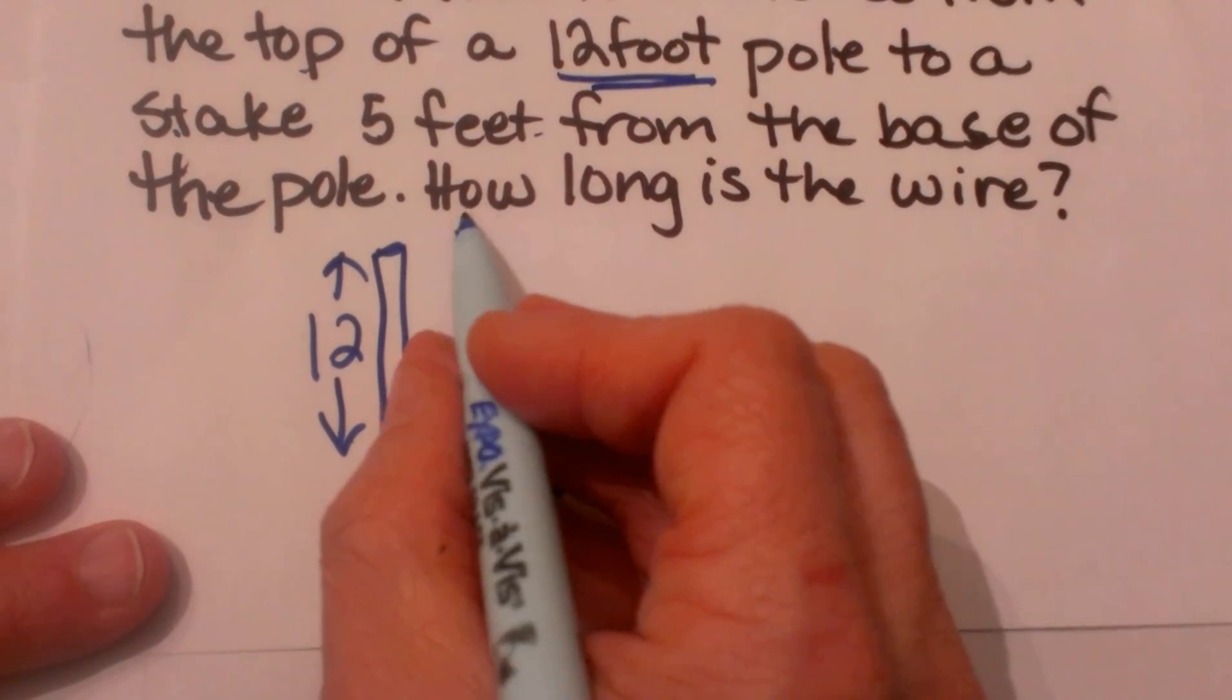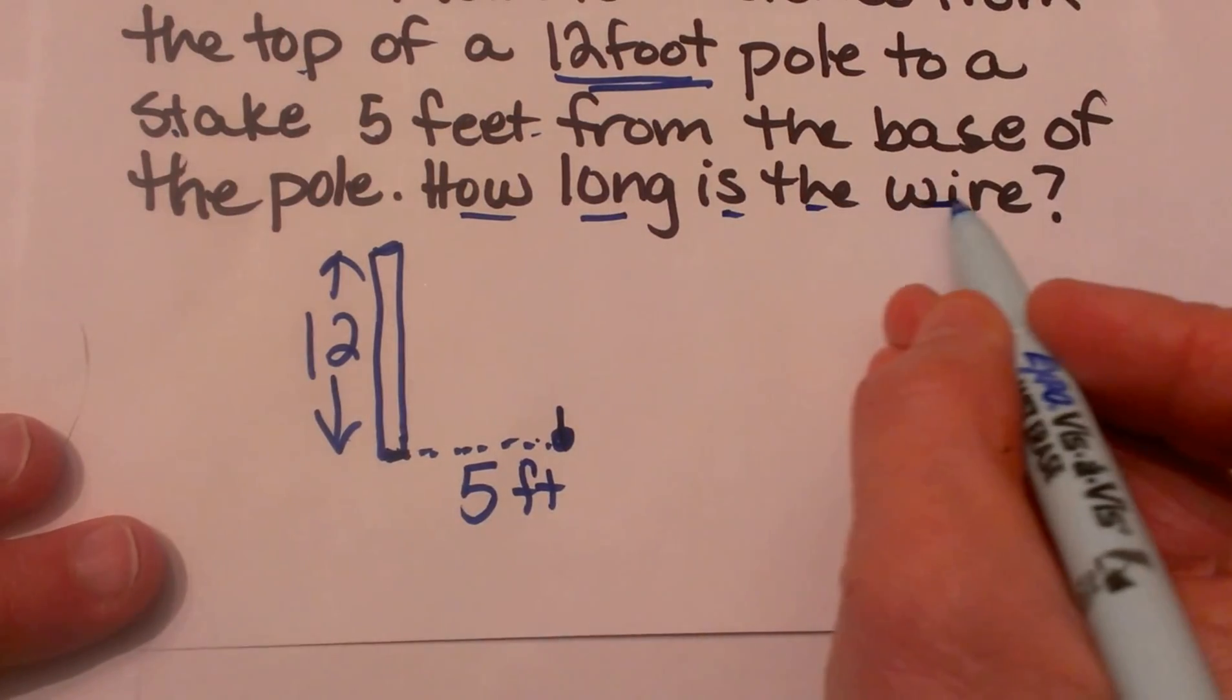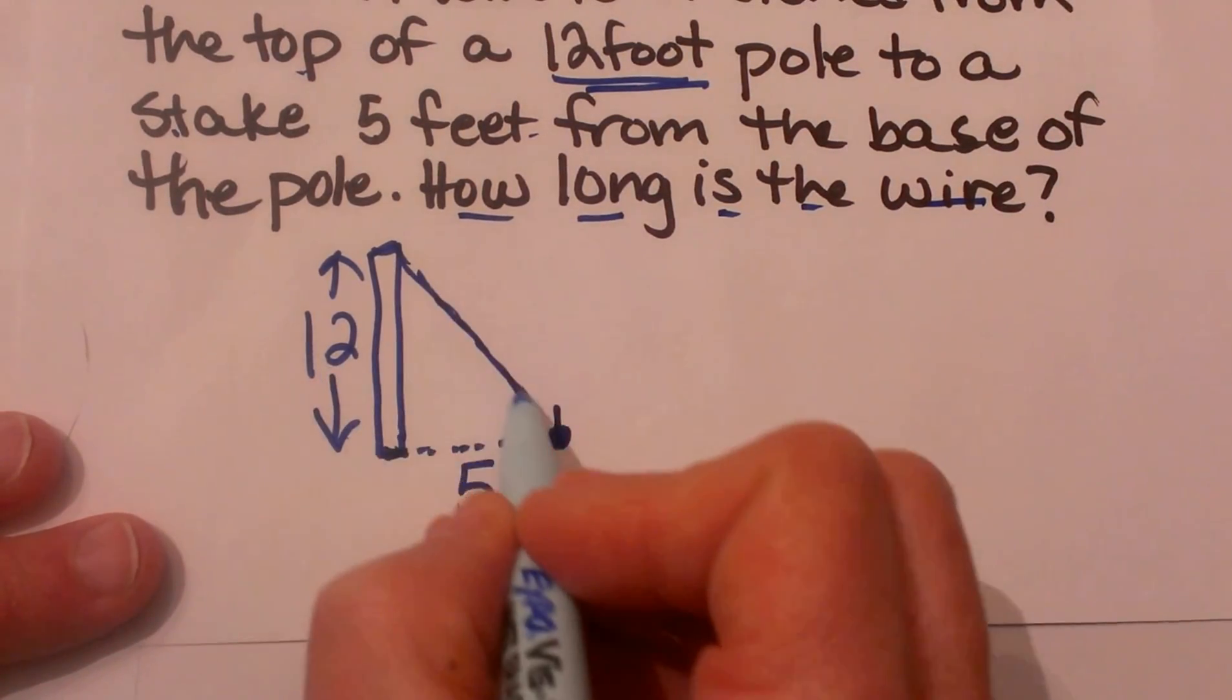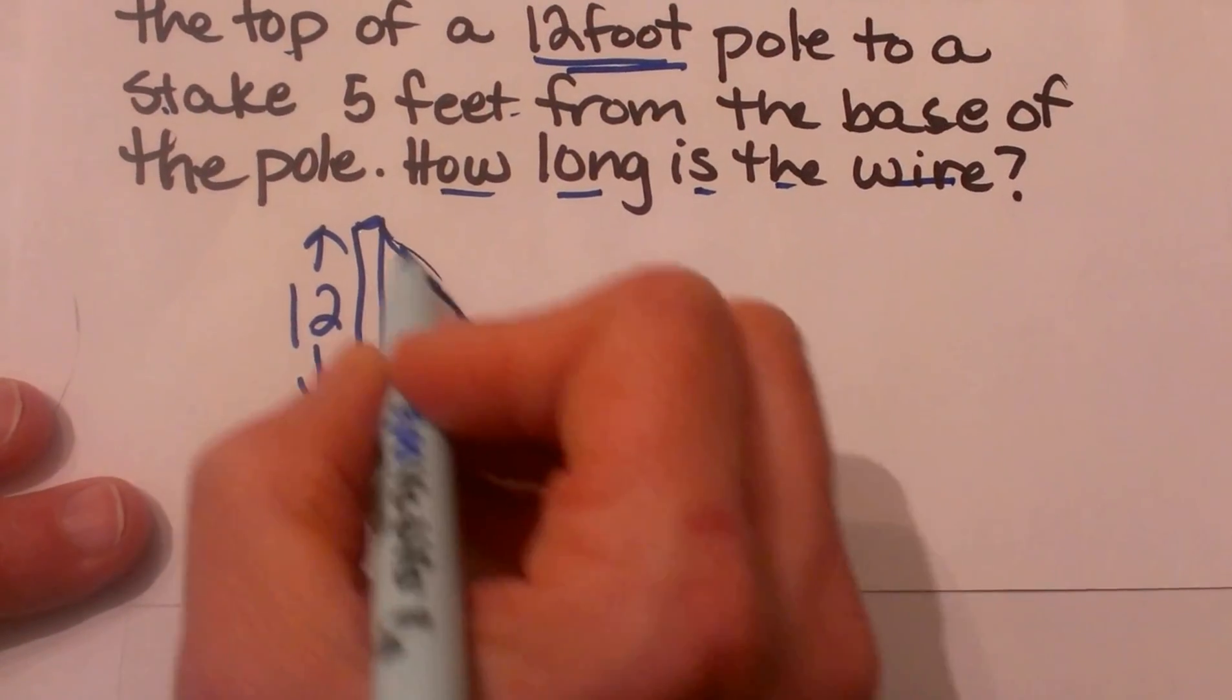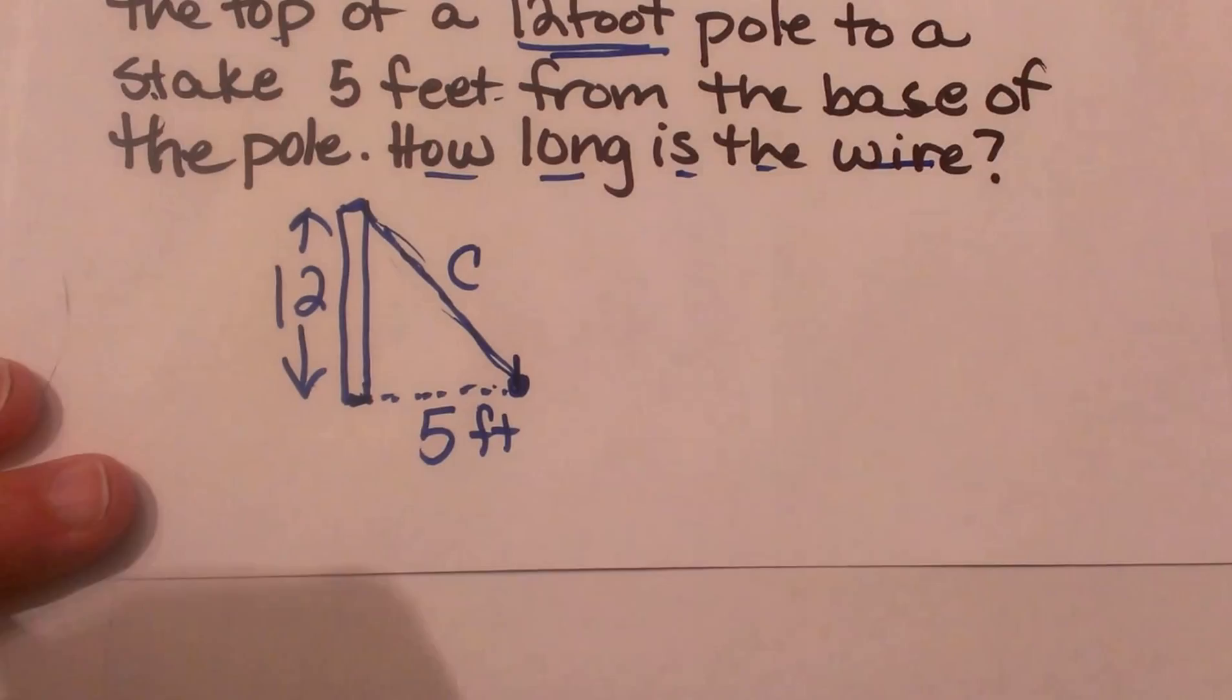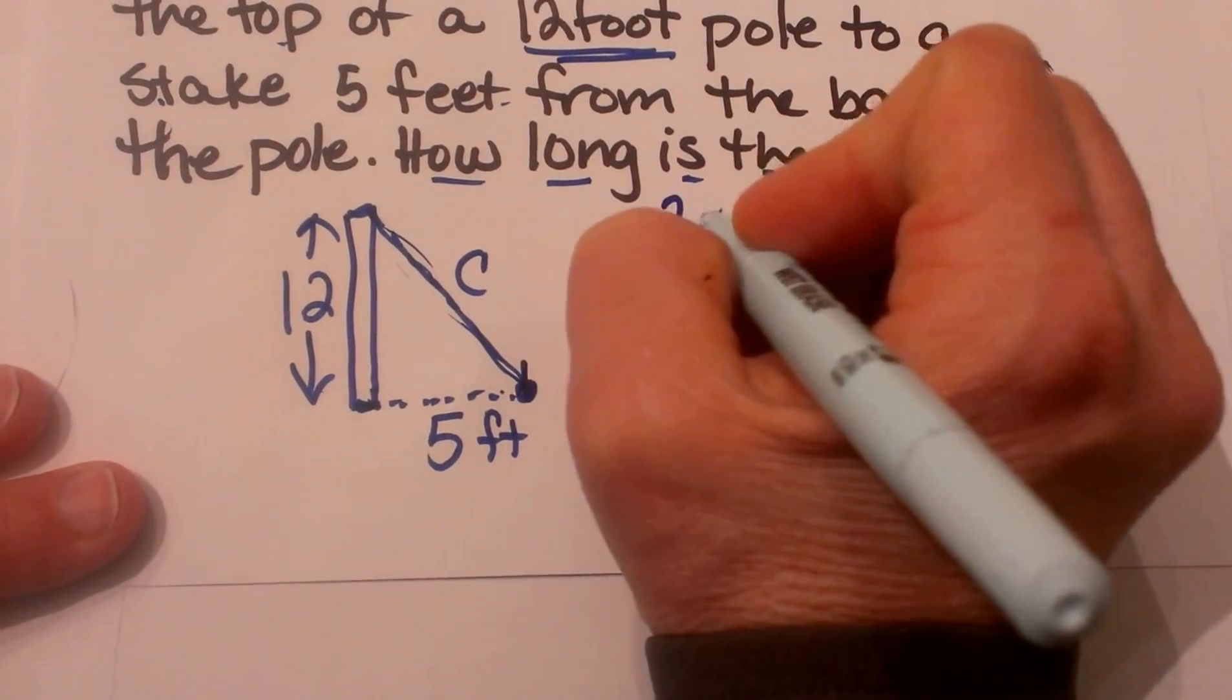And then they are asking us how long is the wire? Well the wire would stretch down. So here is our unknown distance. It is this part. And that is the hypotenuse. So that is c. I'm going to label that c. So now let's write the Pythagorean theorem down.